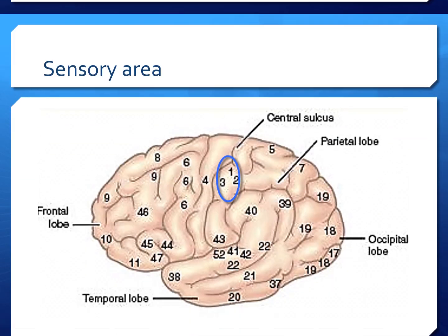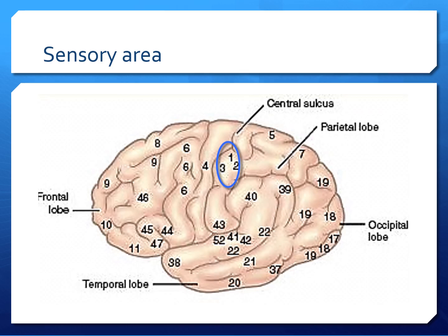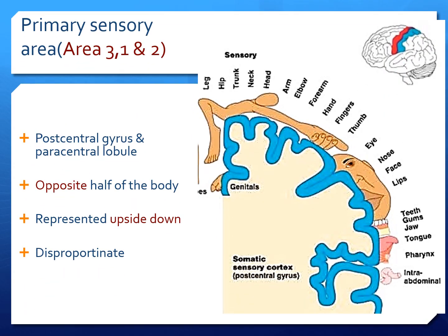The sensory area is area number 3, 1, and 2. It occupies the post-central gyrus and the paracentral lobule. Once again, it represents the opposite half of the body in an upside-down manner with disproportionate representation — the hand, face, and tongue getting more areas of representation, depending on the intricacies of the sensations received from these areas.